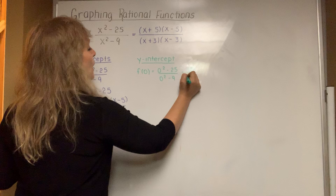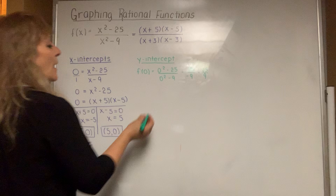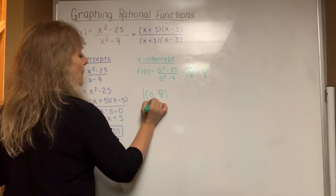Plugging in zero gives negative 25 over negative 9. Even though it doesn't divide evenly, a negative divided by a negative is a positive. If asked for a y-intercept, write the answer as a point. The x value is zero, but the y value came out to be 25 over 9, which is kind of close to the number 3, since 27 divided by 9 is 3.